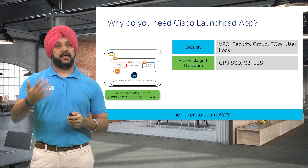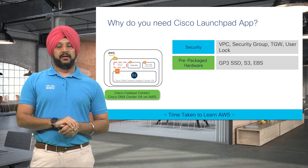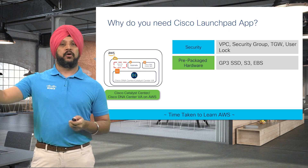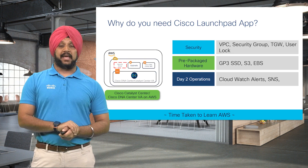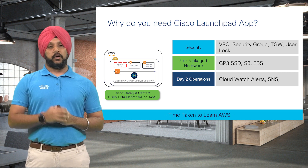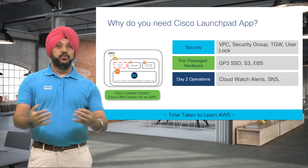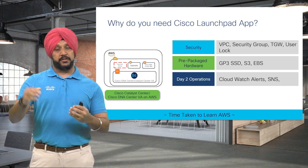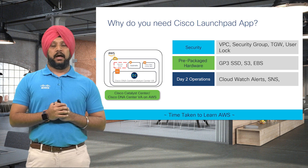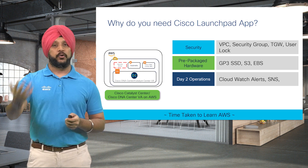We have also taken care of choosing the right AWS SSD drive — the GP3 SSD — choosing the right S3 bucket and the right storage format, so you don't have to worry about those components on AWS. Once your Catalyst Center is up, we also want to make sure it's always up and running. AWS offers CloudWatch functionality where all issues and changes in your AWS infrastructure are reported. With the Launchpad app, we have enabled CloudWatch alerts, and with SNS notification, you will get an email if anything is wrong with your network or Catalyst Center on AWS.